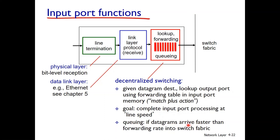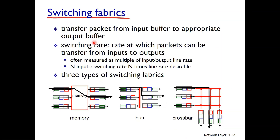If datagrams arrive faster than the forwarding rate into the switching fabric, queuing occurs at the input. The switching fabric transfers packets from input to output port. There are three switching fabric implementations: first, memory-based; second, bus-based; and third, crossbar.